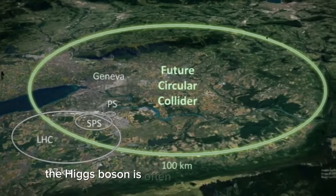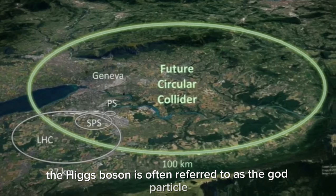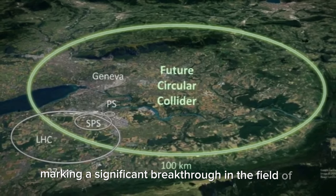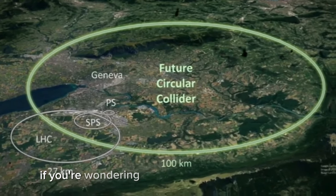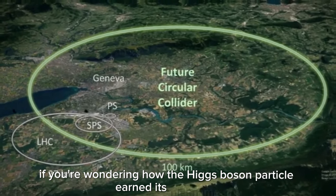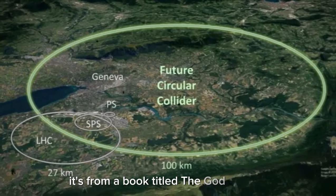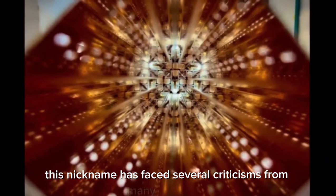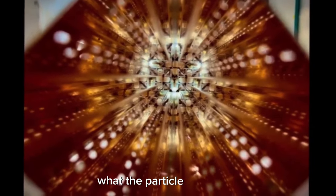The Higgs boson is often referred to as the God particle, and it made its appearance at CERN in 2012, marking a significant breakthrough in the field of particle physics. If you're wondering how the Higgs boson particle earned its nickname, it's from a book titled The God Particle, which was written by Leon Letterman in 1993. However, this nickname has faced several criticisms from many physicists due to its potential to mislead the public into believing what the particle stands for.